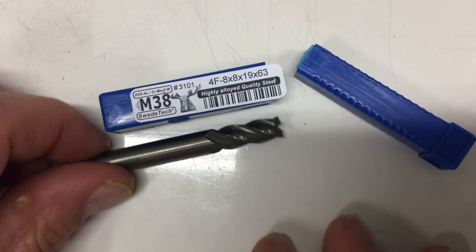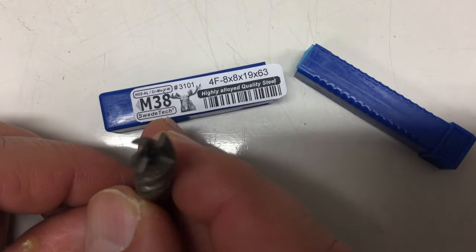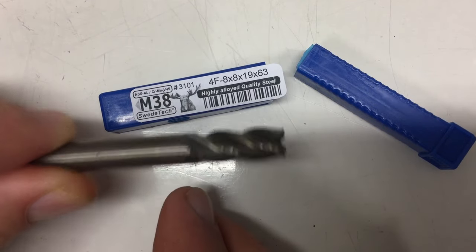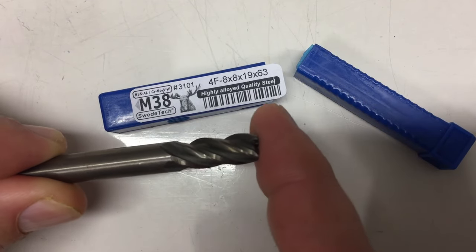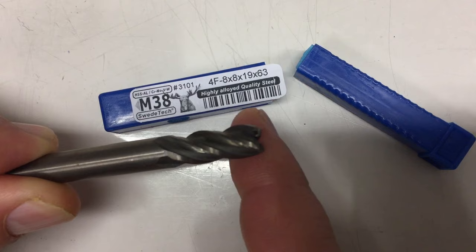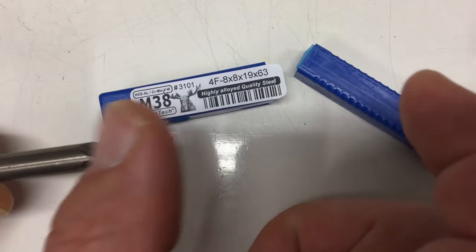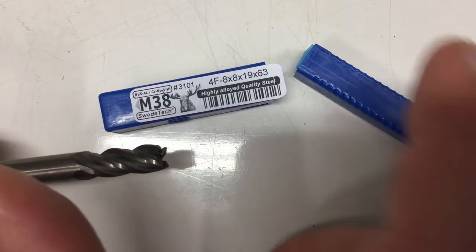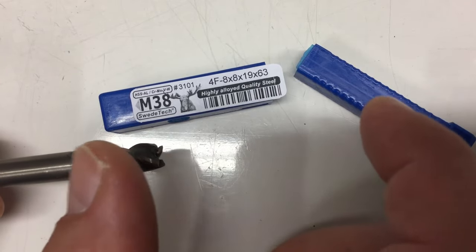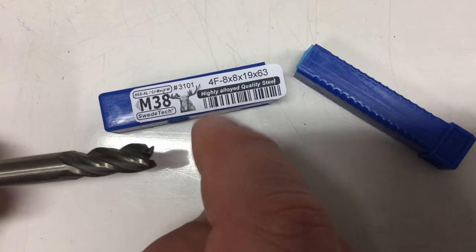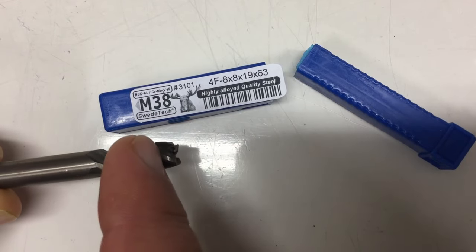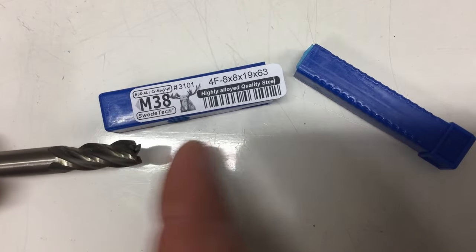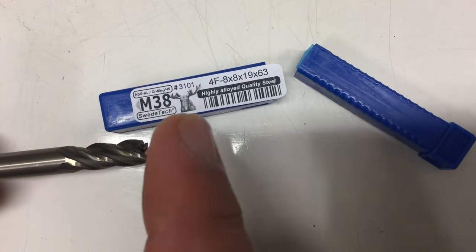That's just a four-fluted eight millimeter end mill and I need that to make a little round two and a half millimeter deep pocket into the end of the shaft of my project. The steering wheel will be attached to that shaft and then you turn the shaft and the magnet turns, and on the other side will be a magnetic angle sensor.